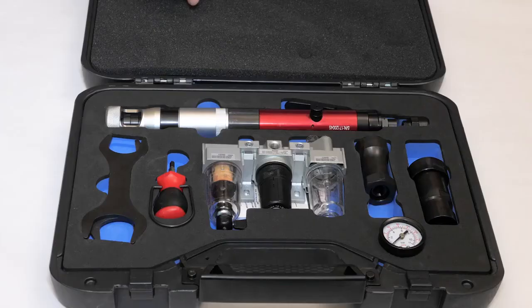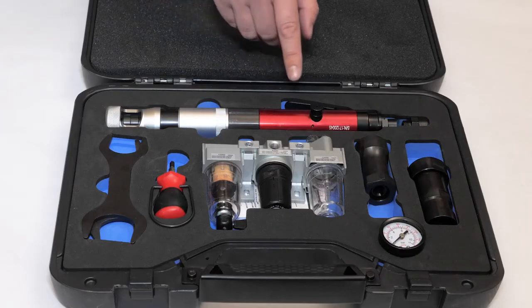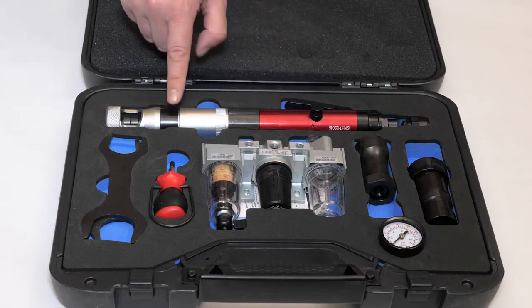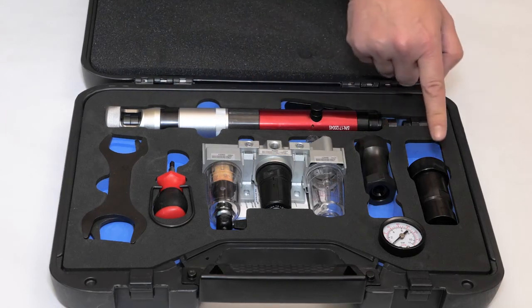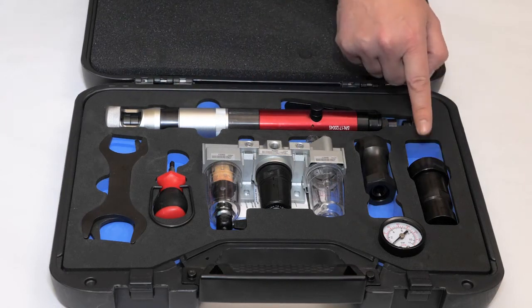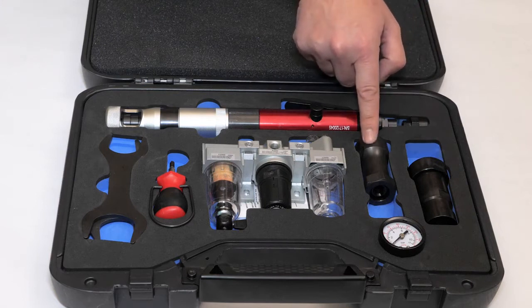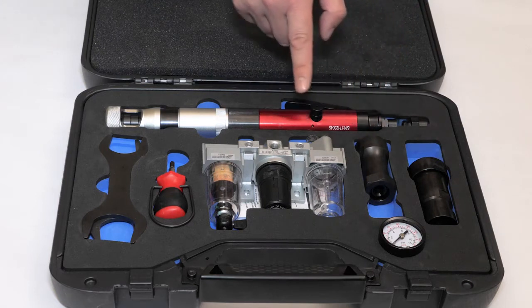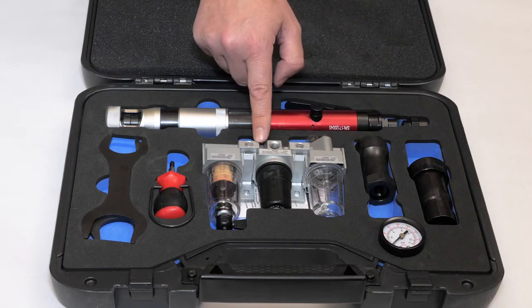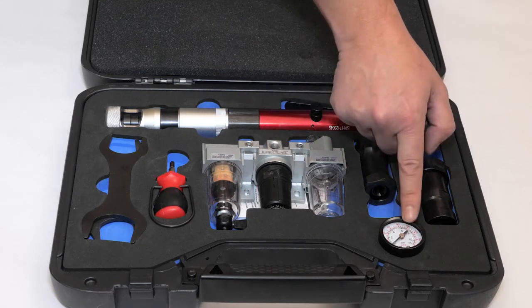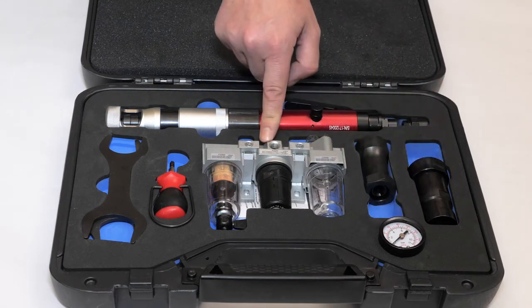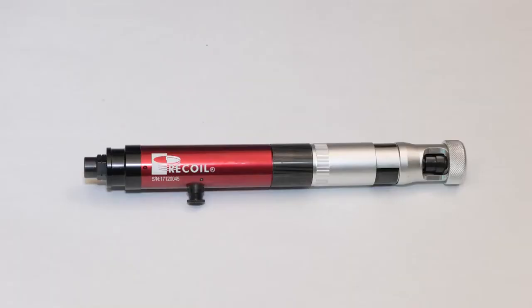The Recoil REC 10K Pneumatic Air Driver is offered in a kit that includes the Pneumatic Driver, a Hex Adapter, a Large Front End Assembly or FEA, a Small FEA Adapter, the Lubricator and Regulator, a Pressure Gauge that goes onto the Regulator, and the Spanners.